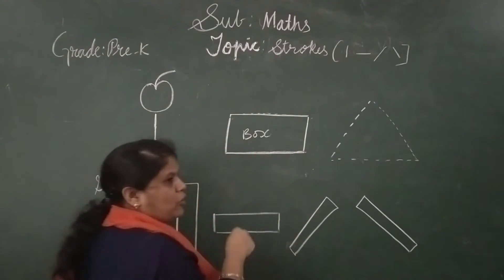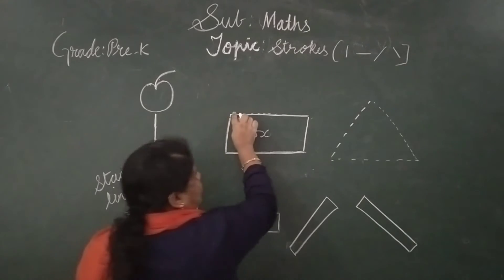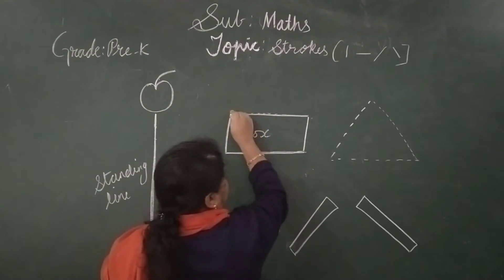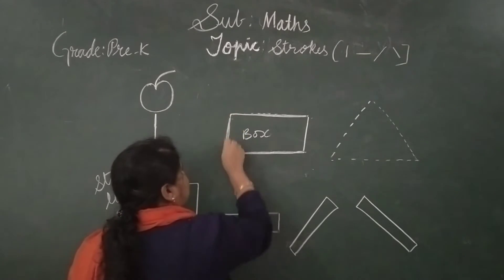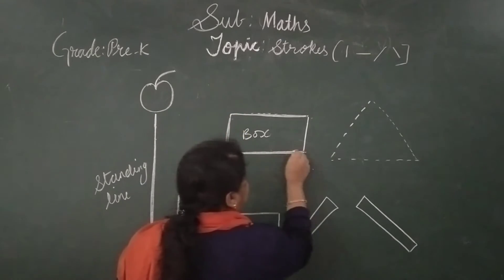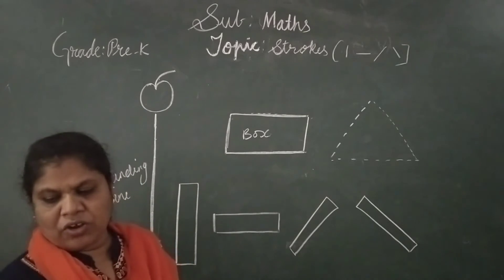A box, if you take a geometry box, if you go from here, this is a sleeping line. If we write like this, it is a standing line. This is a sleeping line.